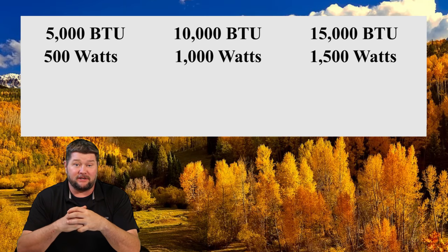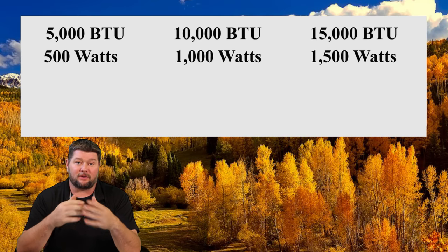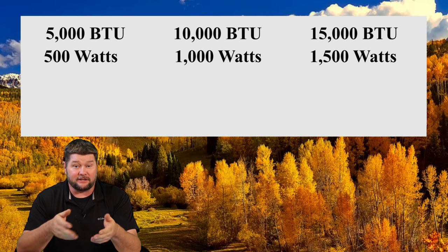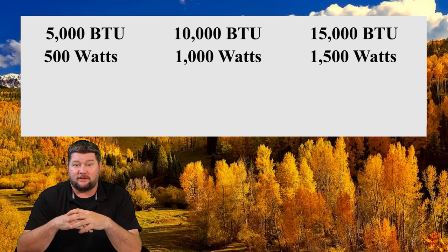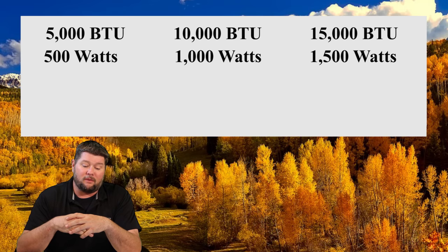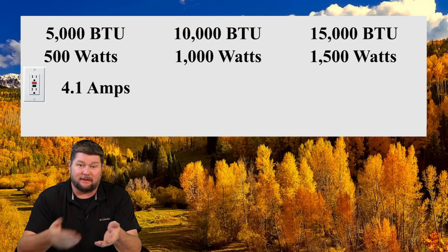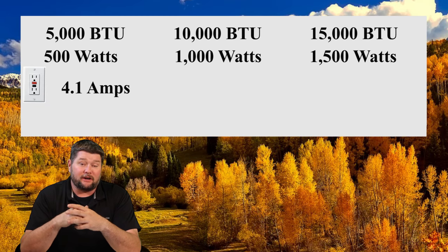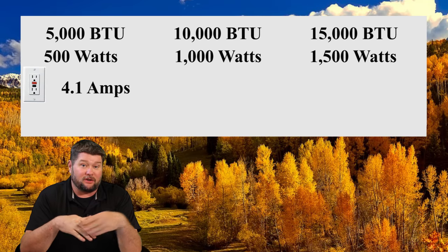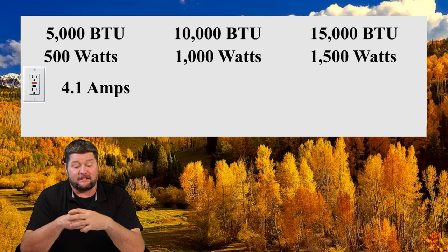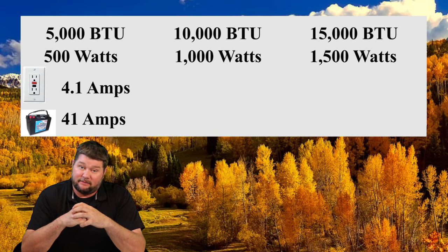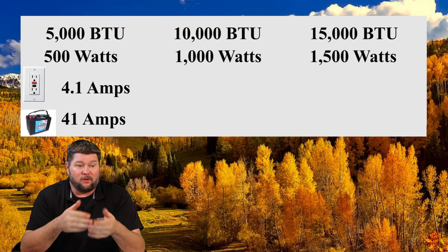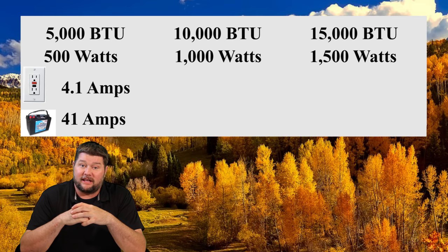If you want to know the amperage — say you're building a battery system, or you want to know how much energy they're consuming in amps — a 5,000 BTU air conditioner is going to run at about 4.1 amps if you're plugged into a 120-volt system like your house wall plug. If you're trying to run that off battery power using only 12 volts instead of 120, then it's going to run at about 41 amps. So 41 amps if you're trying to run it off the battery — that's how much it's going to consume per hour.